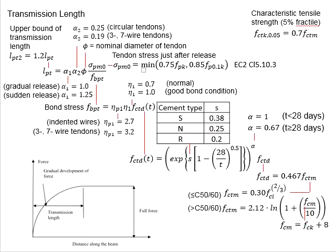Alpha represents the factor for concrete age. If concrete age is less than 28 days, alpha is 1.0. If matured, more than 28 days, alpha is 0.67.